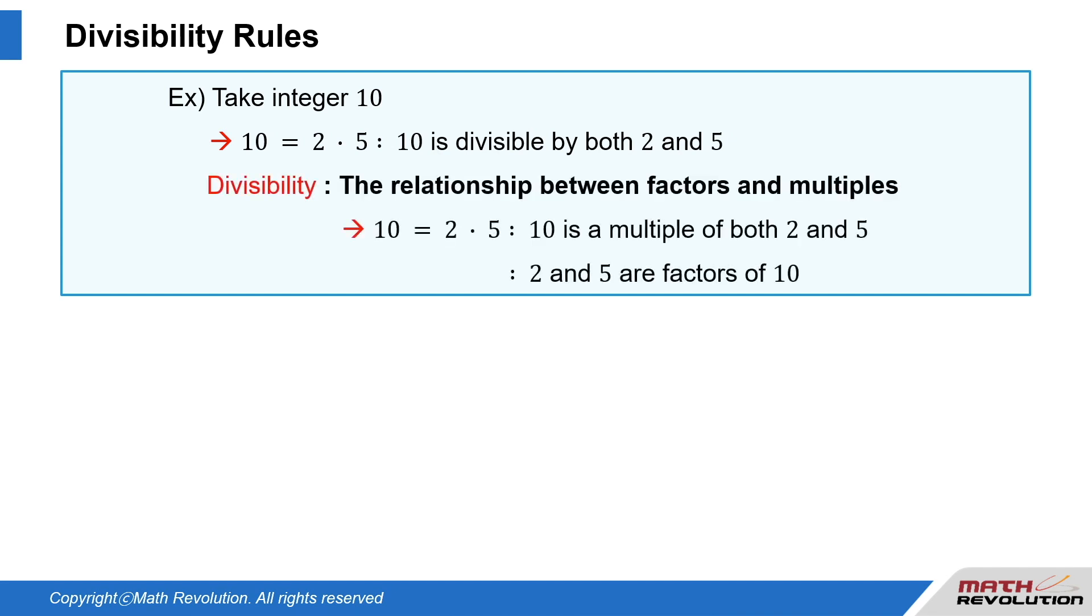Divisibility is also represented by the relationship between factors and multiples. 10 equals 2 times 5 means 10 is a multiple of both 2 and 5, and in turn, 2 and 5 are factors of 10.